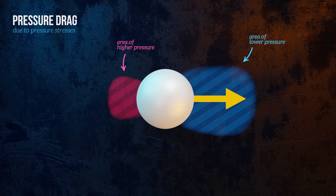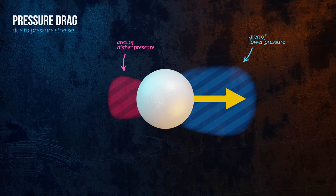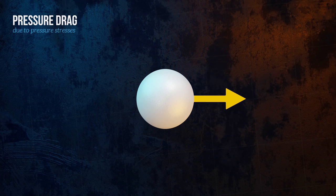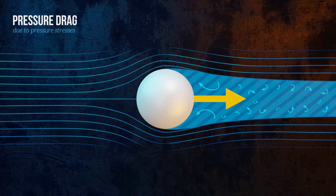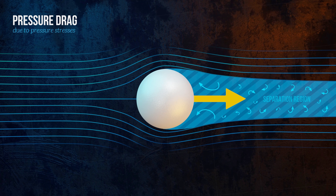Pressure drag increases significantly if flow separation occurs, which is when the fluid boundary layer detaches from the body, creating a wake of recirculating flow. This creates an area of low pressure behind the body, called the separation region, and results in a large drag force.